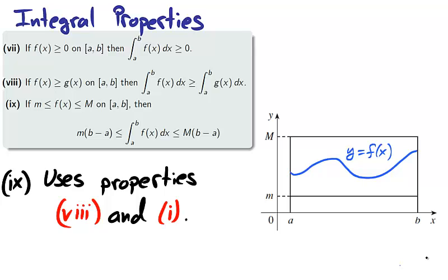Our last integral property, property 9, makes use of the 8th and the 1st property of integrals. If a function is bounded between two constants, little m and big M, then the area under the curve of f is between the area of little m and big M. Looking at the graph, we see that f is contained in the rectangle outlined by little m and big M. Therefore, its area is larger than the function little m below it and smaller than the function big M above it. As little m and big M are constants, we use the 1st property of integrals to calculate their integral as a rectangle.